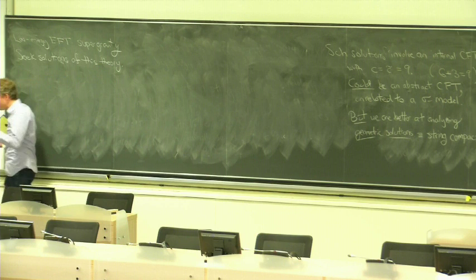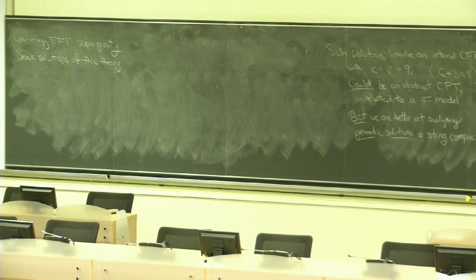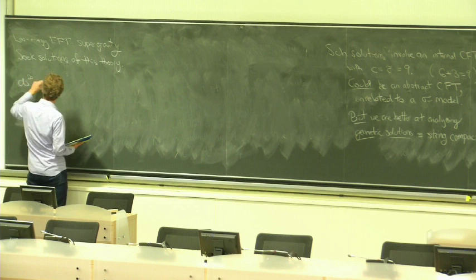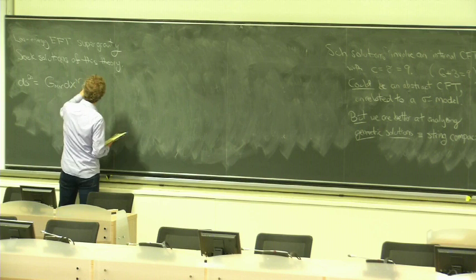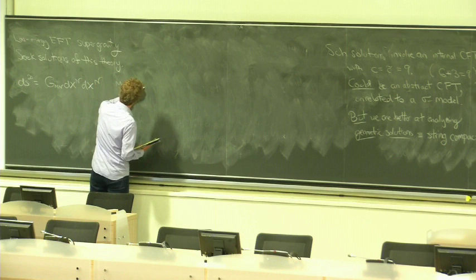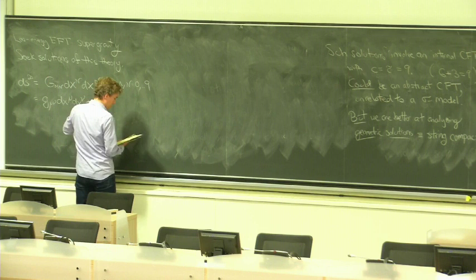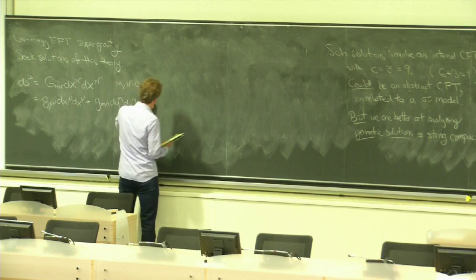So, let's seek solutions. A price we're going to pay by moving to the effective theory is when we find solutions, we'll always be wondering whether they come from solutions of the full string theory. So, we'll have to examine that carefully. But we're going to make this move now. We're going to work in solutions of this theory, the effective theory. And so, we can start out with some sort of ansatz. Since I'm now, henceforth, talking about critical super string theory, I'm going to work in 10 dimensions. So, the indices m and n run from 0 up to 9.